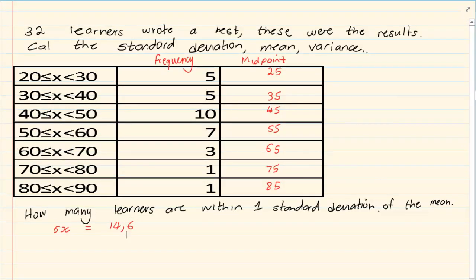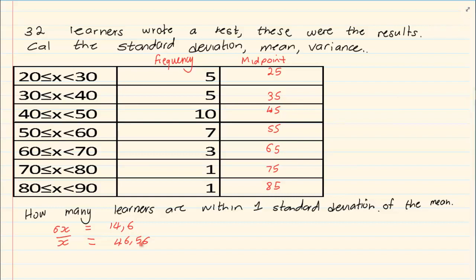Then they ask you to calculate the mean. Press AC, Shift 1, number 4, then number 2. Remember for mean we are looking for the sign with the x and the line over it. The mean equals 46.56. Then they want the variance — variance is your standard deviation squared. So 14.6 squared equals 213.18.